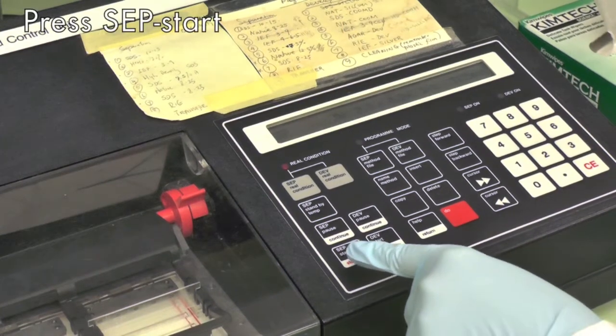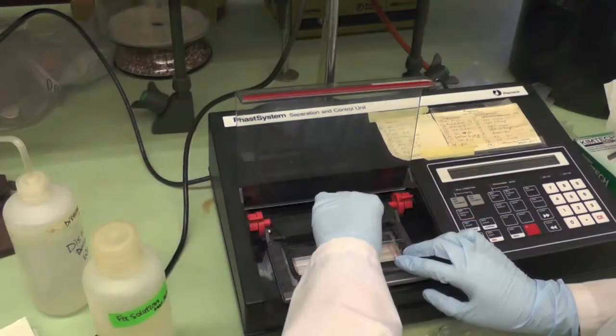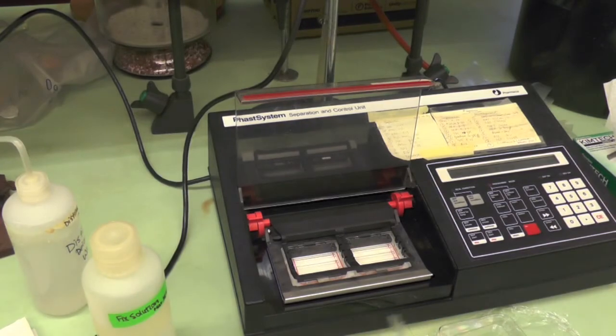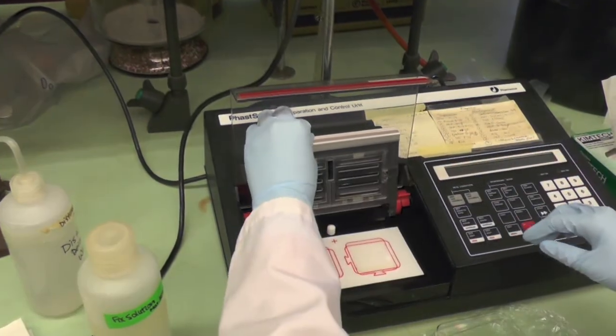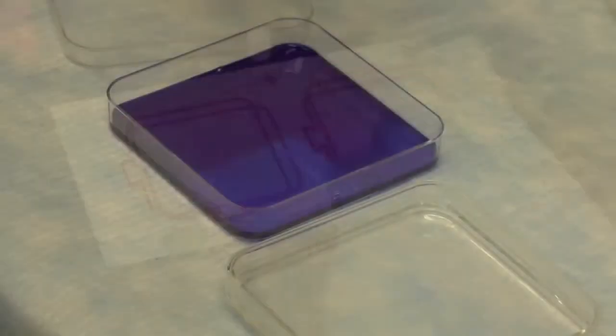Stop the gel by pressing set start. Throw away the sample applicator. Take the gel out and immediately put it into the staining solution to stain.